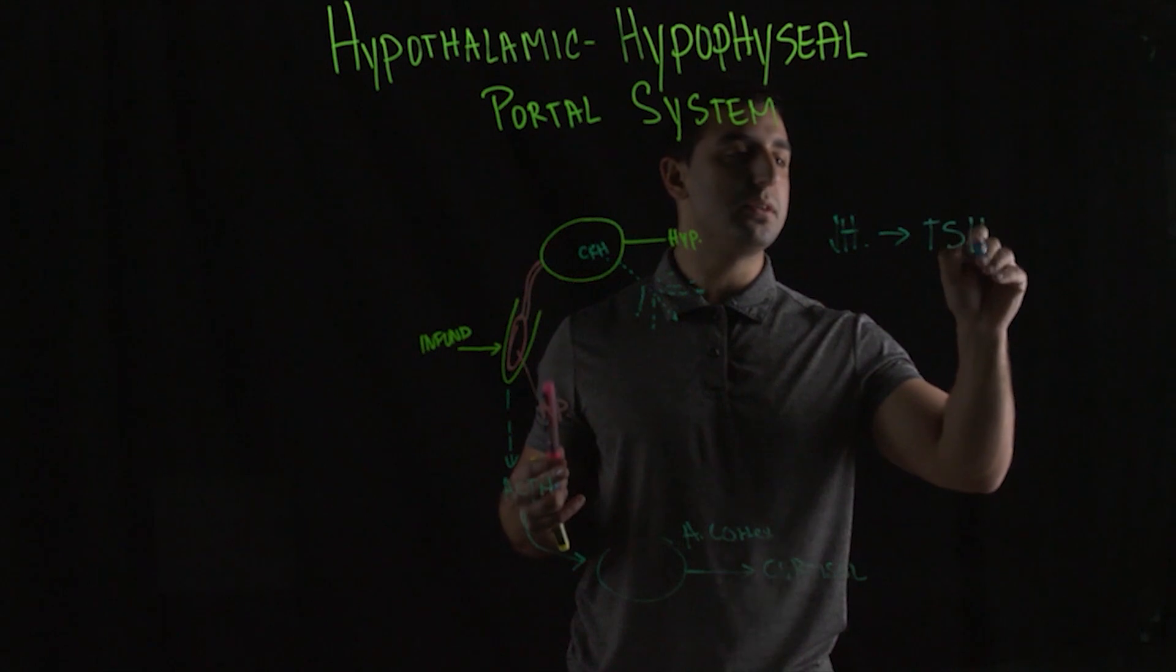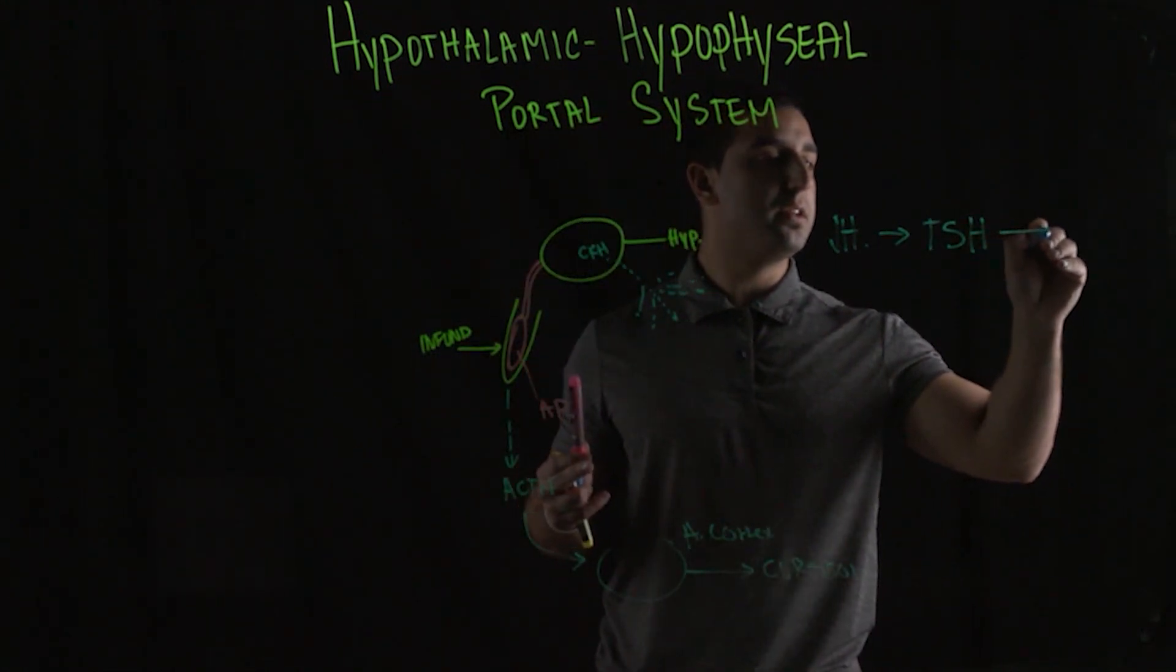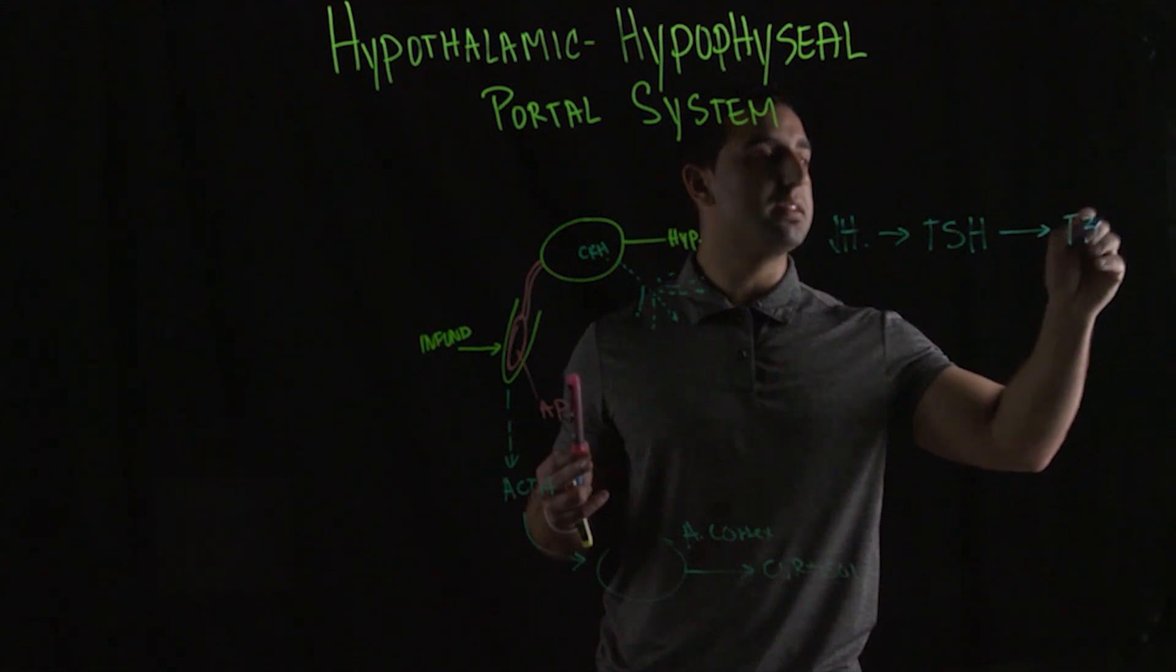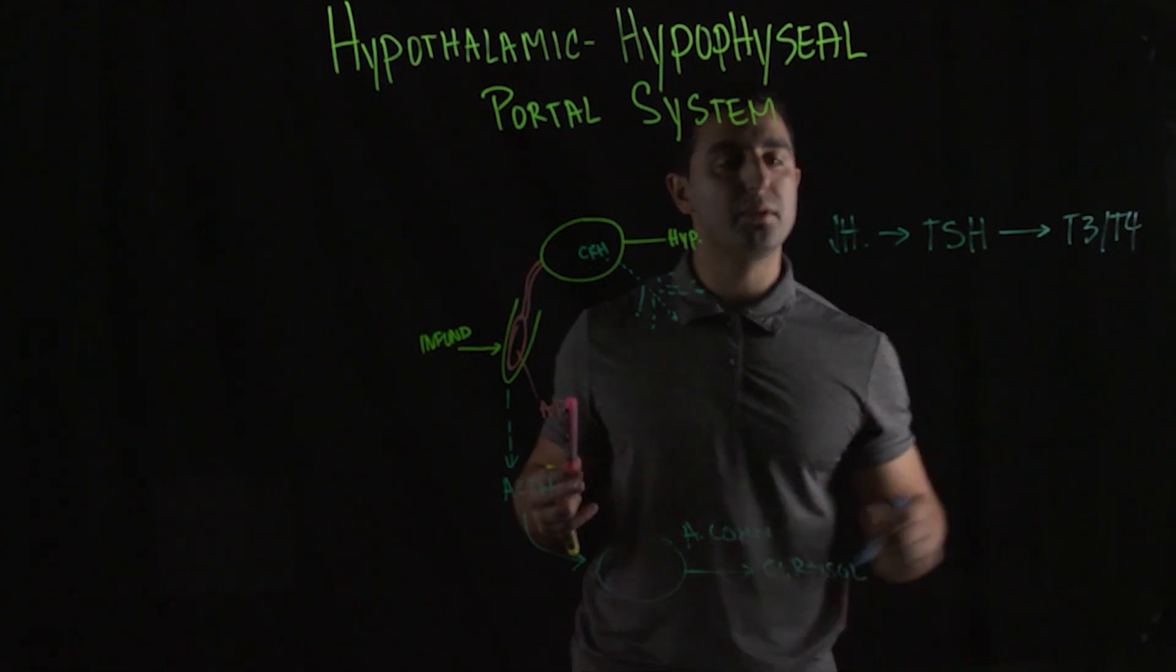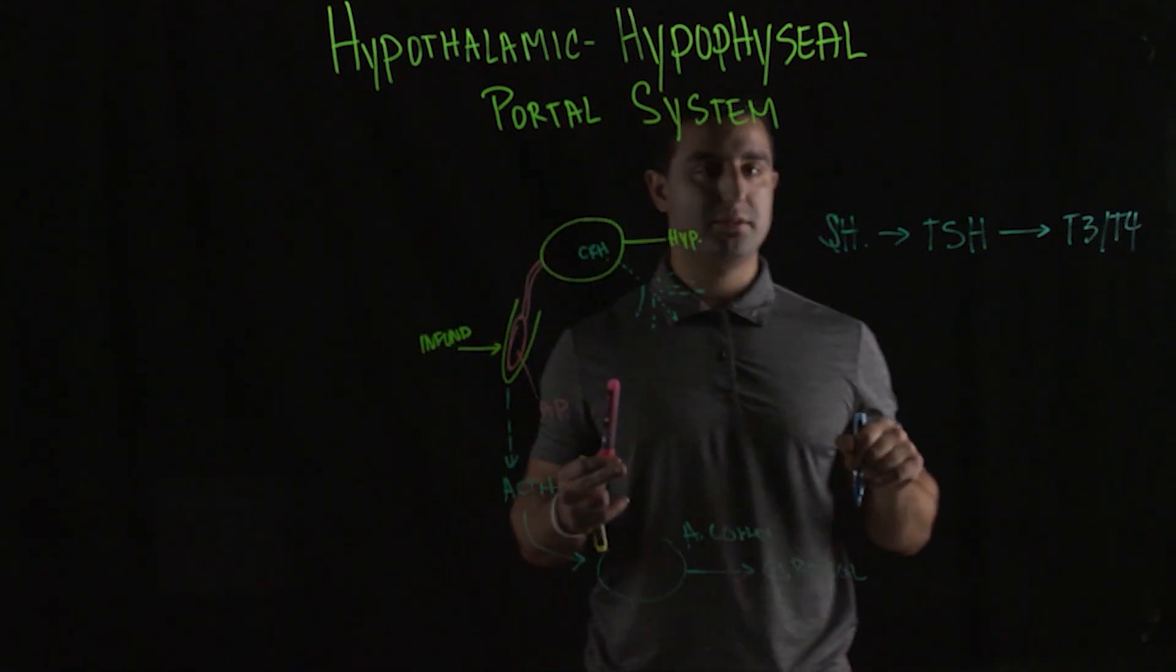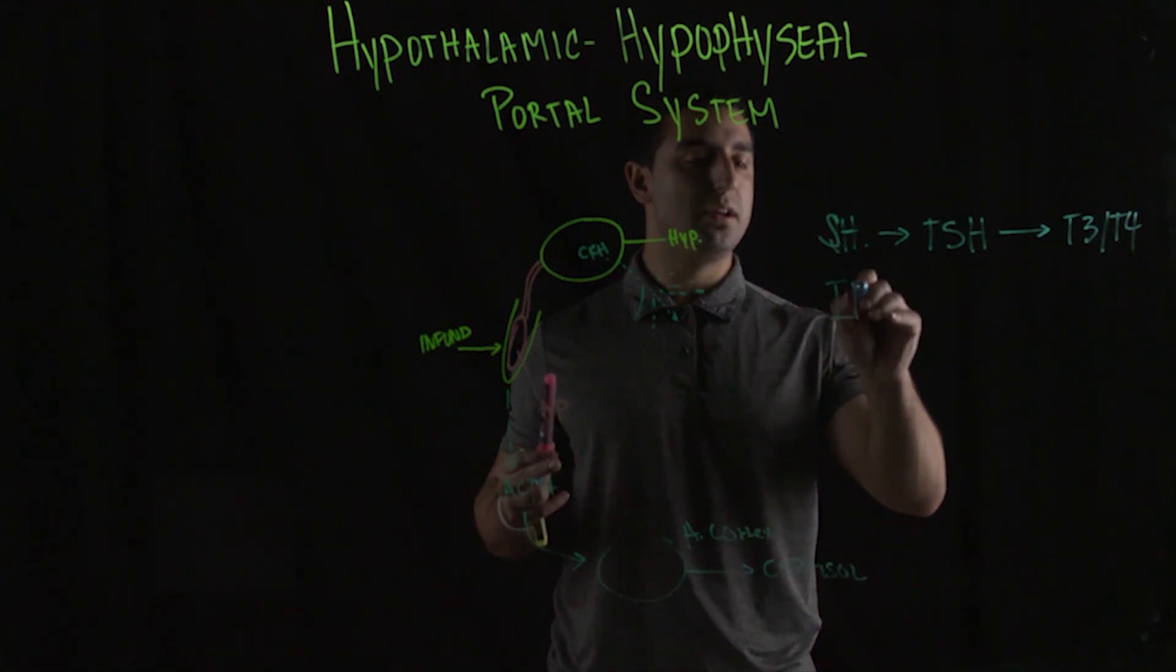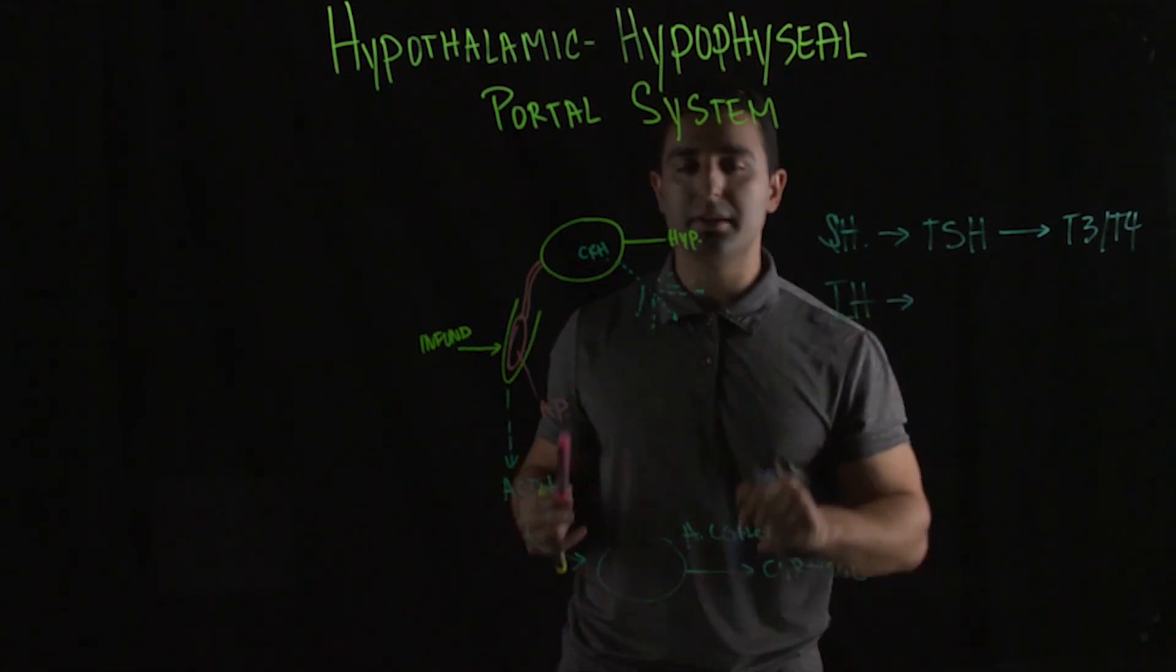If we look at TSH that we learned from the anterior pituitary that is secreted, this goes to the thyroid to secrete its thyroid hormone, the T3, T4. So you have stimulating hormones. And also, you have another type of hormone: inhibiting hormones. So both of them are constantly being secreted. An example of inhibiting hormone is dopamine.